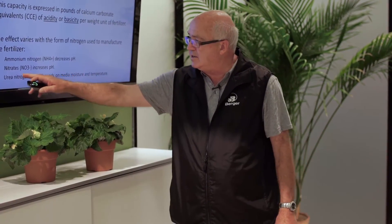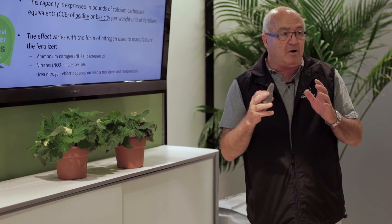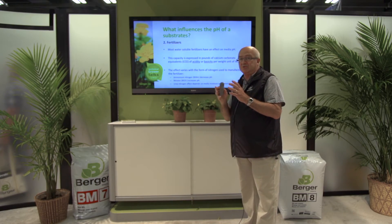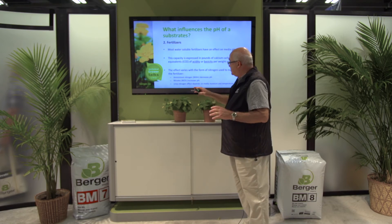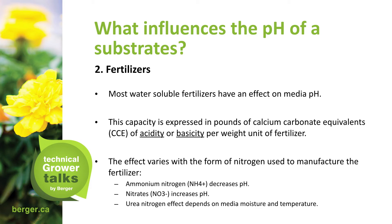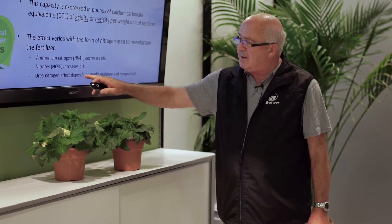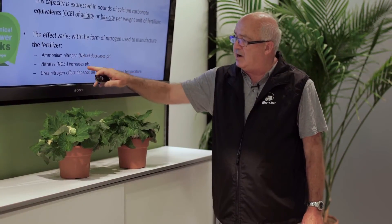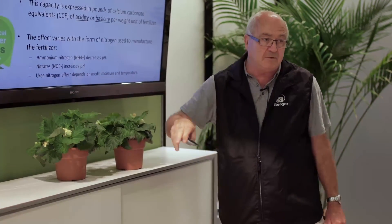Whereas nitrates — if you remember the hydroxyl ion, which is basic — nitrates actually increase pH. Urea nitrogen's effect depends on medium moisture and temperature, because the nitrifying bacteria have to go through that same process to work on urea.